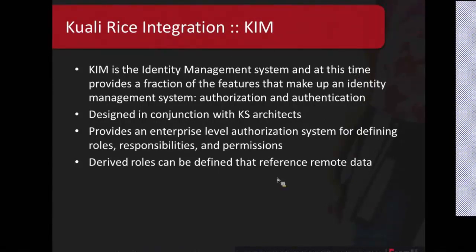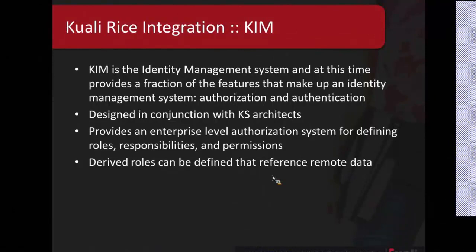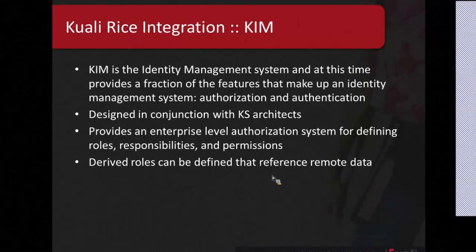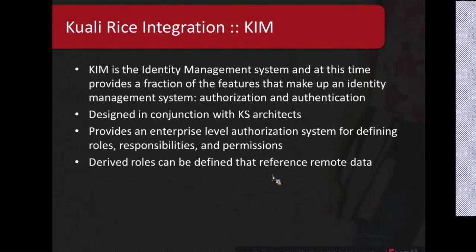One of the interesting things with KIM is that derived roles can be determined based on remote reference data. You could define a derived role that says: if you're in this class, then you have authorization to visit some website. That reference to the student being in the class is not in the Rice system — it's in the KS system. So when you call into KIM and check for authorization to visit a website, there may be derived roles that allow someone to visit that website, which would actually call out to the KS remote services.